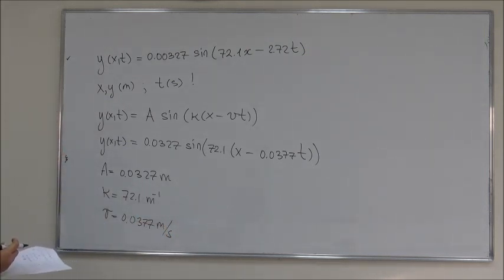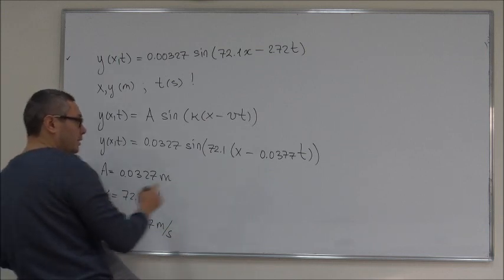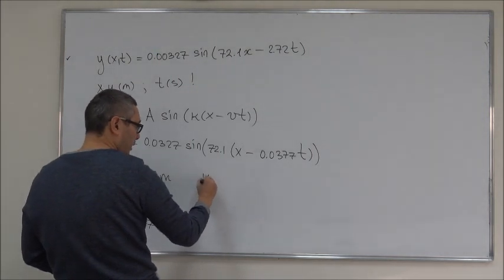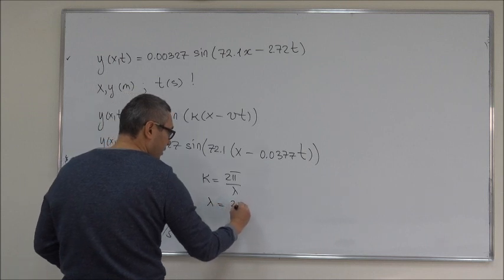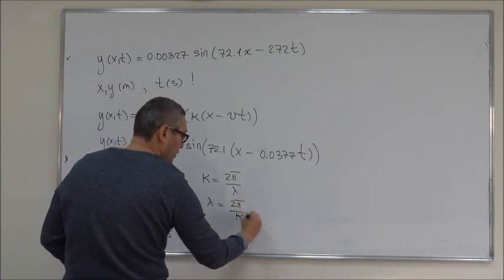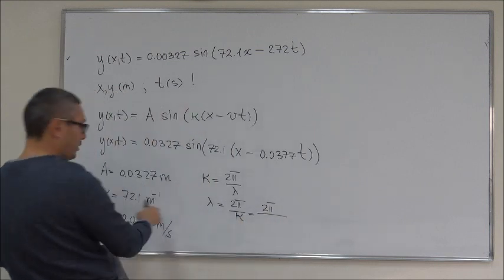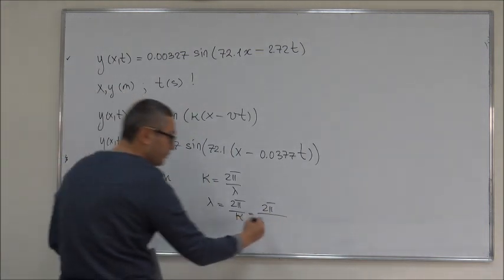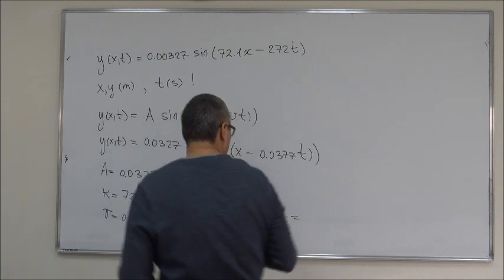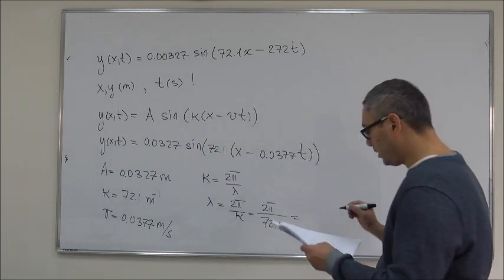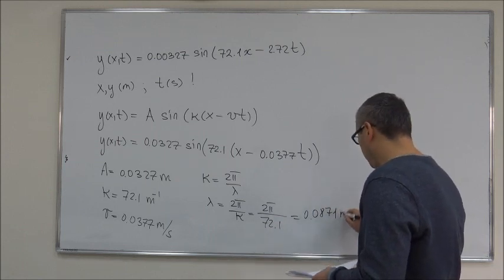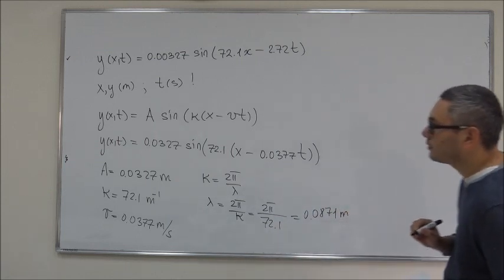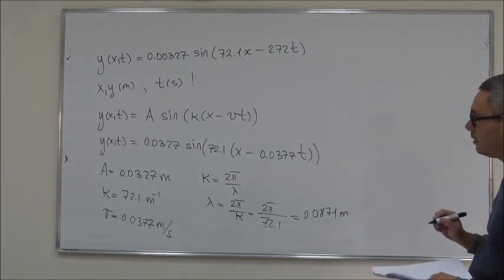So, the next thing we can find from here is the wavelength. Well, the wavelength is related to the wave number, so k is equal to 2π over λ, so λ is equal to 2π over k, so 2π over this number k, which is 72.1, and if you calculate that, you get 0.0871 meters. Again, I'm keeping everything to three significant figures here. So, now we know the wavelength.